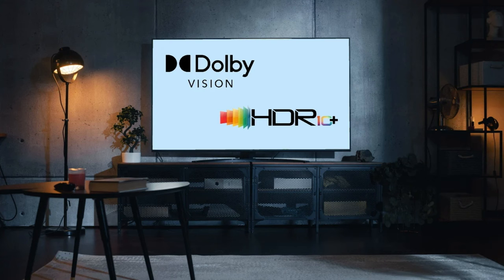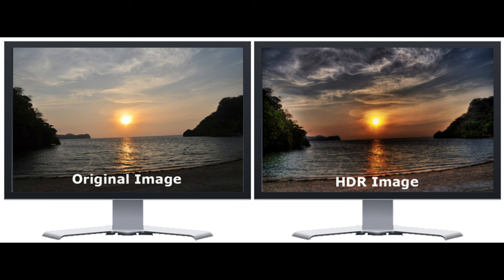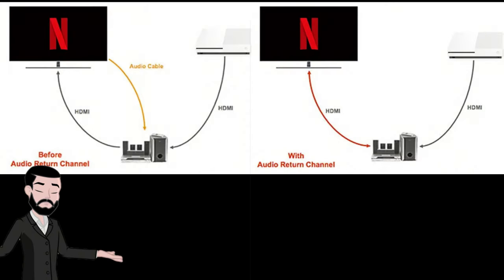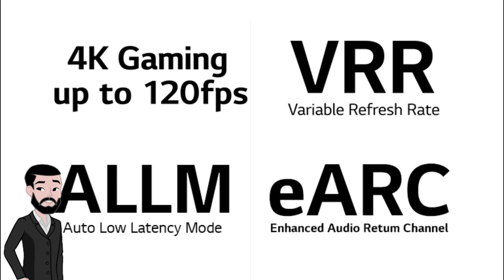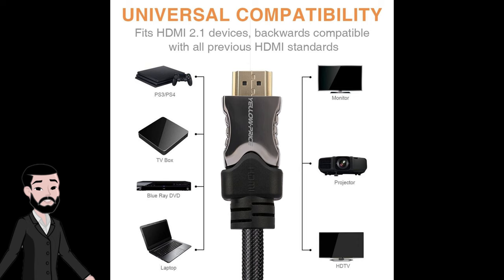Dynamic HDR allows the HDR metadata to be adjusted scene by scene or even frame by frame, providing more precise contrast and color adjustments. HDMI 2.1 also has enhanced Audio Return Channel (eARC), variable refresh rate, auto low latency mode, Display Stream Compression, and more.